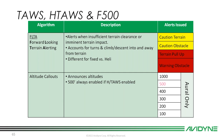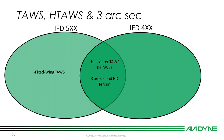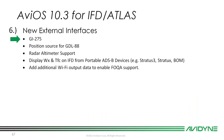For TAWS, HTAWS, and the F500 (the 500-foot callout): the FLTA algorithm is still providing all the alerts you're used to, now rolled into TAWS as part of the TSO. We've added the 1,000-foot and 500-down-to-100-foot altitude callouts as well. To clarify: both Four and Five Series can get the three arc-second HD terrain upgrade; if you purchase TAWS, that terrain is included; and fixed-wing TAWS is Five Series only, while both can do HTAWS.